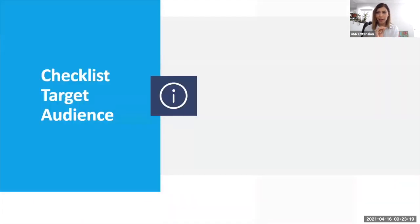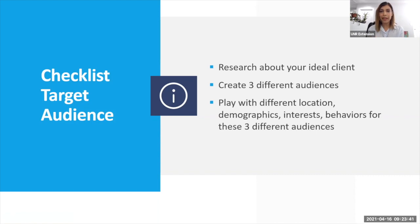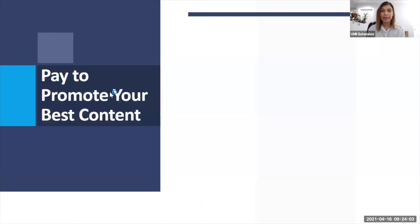Here's a checklist — and you're going to get these slides, so don't worry. First on the checklist: research your ideal client. Create at least three different audiences and play with different locations, demographics, interests, and behaviors for these three different audiences. This is the right way to start understanding your audience before putting money into a paid ad campaign. If you have any questions about how to target an audience, please let me know — I'm here to answer your questions.